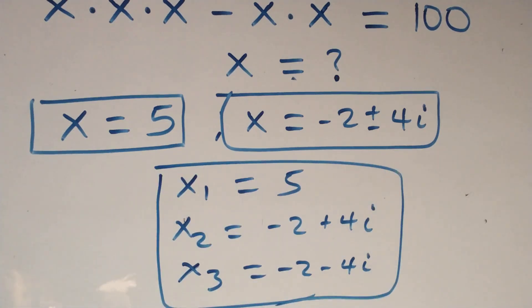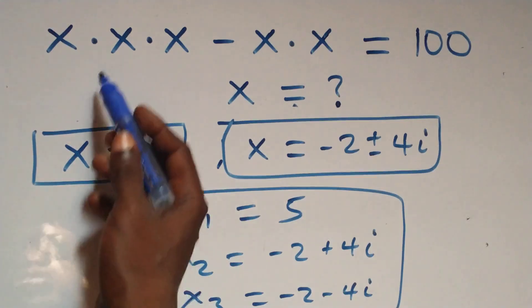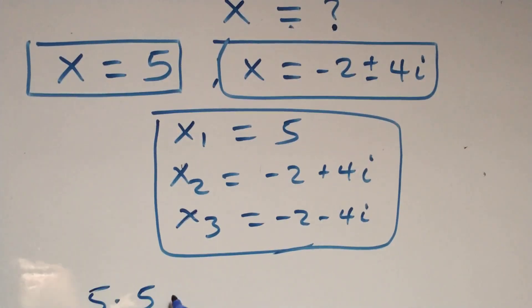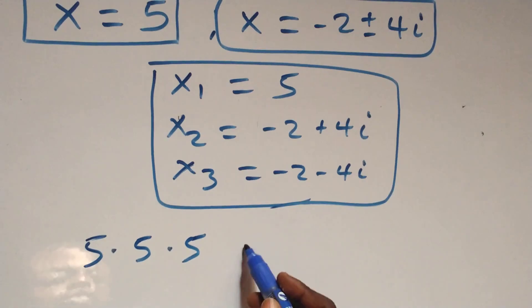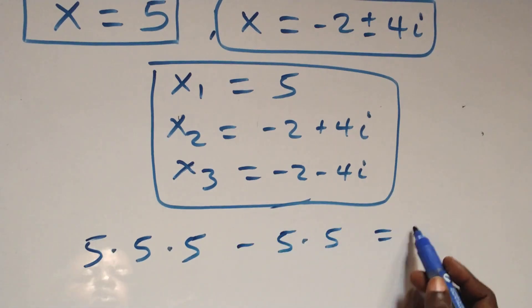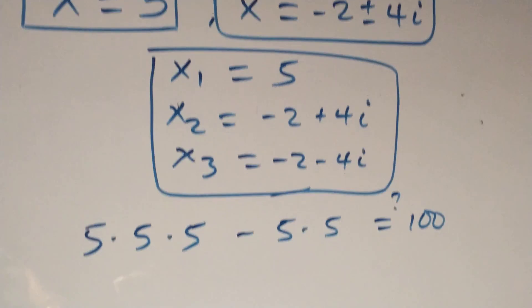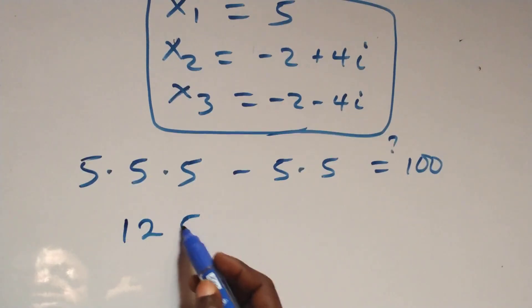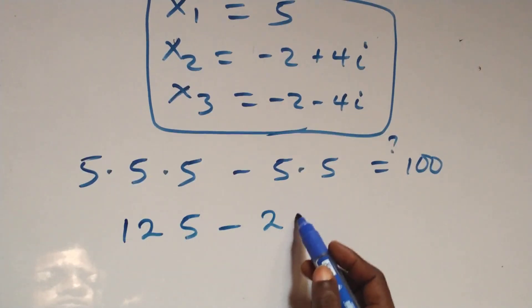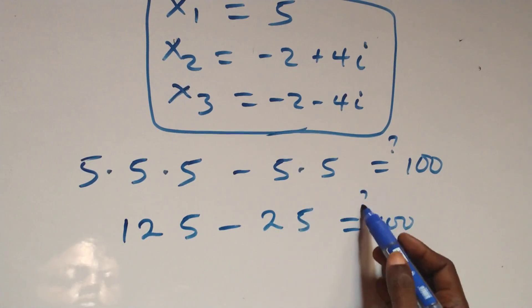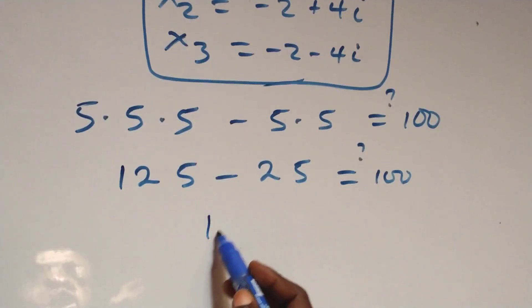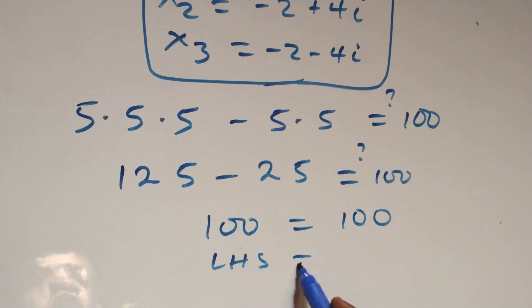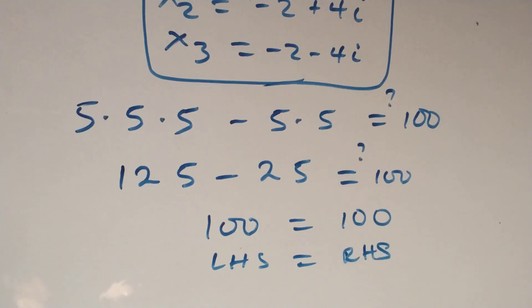We check by substituting x equals 5 into the original equation. This becomes 5 times 5 times 5 minus 5 times 5, which is 125 minus 25. That equals 100, which matches the right hand side. The left hand side equals the right hand side, confirming that x equals 5 satisfies the given problem.